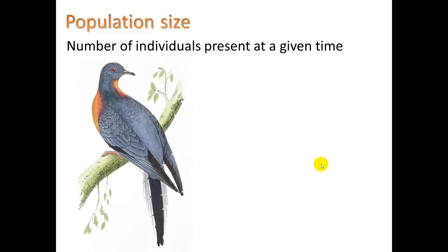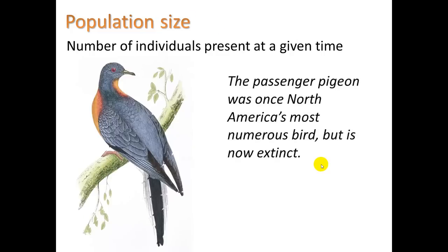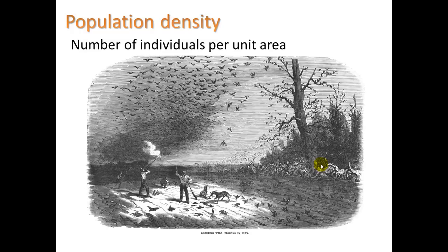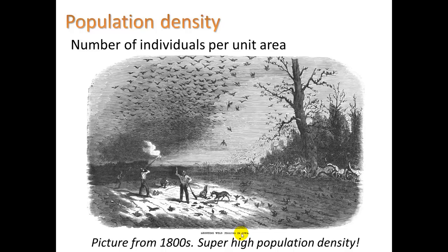Population size is the number of individuals present at a given time. Here we see the passenger pigeon, which was once North America's most numerous bird, but is now extinct. 240-mile long flocks have been observed — you can see this incredibly long flock, very high population density, which means number of individuals per unit area. And here you see shooting wild pigeons in Iowa. Little did they know they would become extinct. This is a picture from the 1800s.